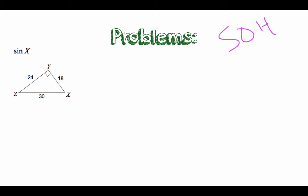The opposite of angle X is 24 over the hypotenuse which is 30. So we go 24 over 30. We'll have to simplify it. Let's take a 6 out of each one. We get four over five as our answer.